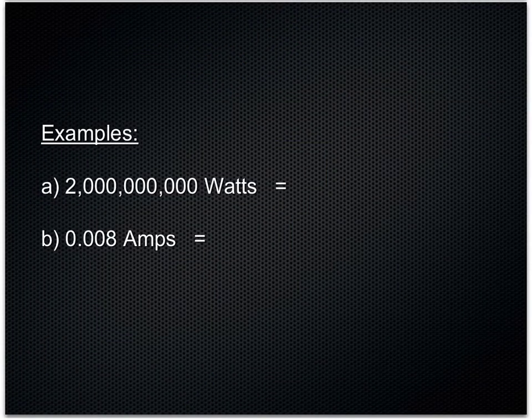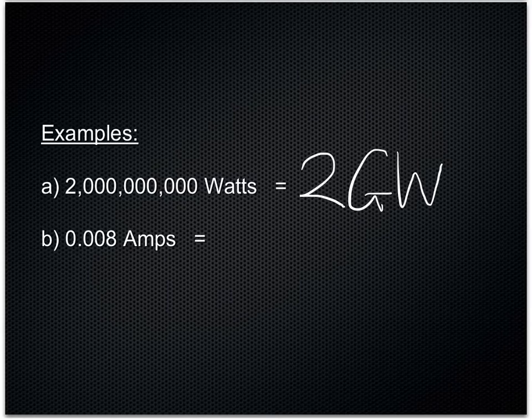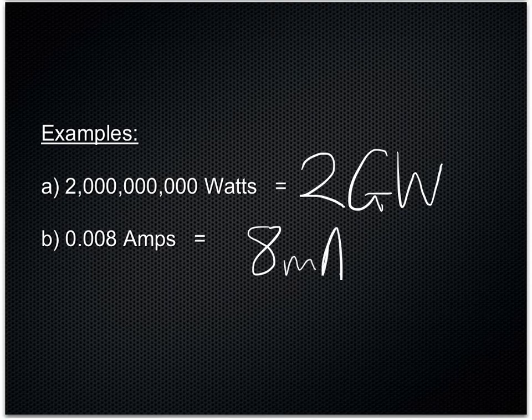For example, we need to write these two numbers in shorthand notation. The first one is 2 billion watts, and that can be simply written as 2 gigawatts. And the next example, we have 0.008 amps, more succinctly written as 8 milliamps.